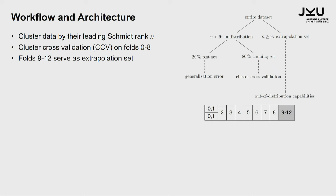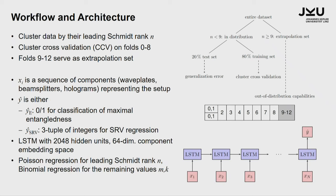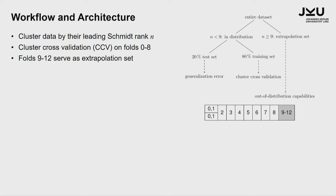This gives you very good generalization characteristics. Moreover, to not only have generalization but really out-of-distribution capabilities, we did not at all train on leading Schmidt rank nine or larger. So we used that as an extrapolation set or so-called out-of-distribution set.